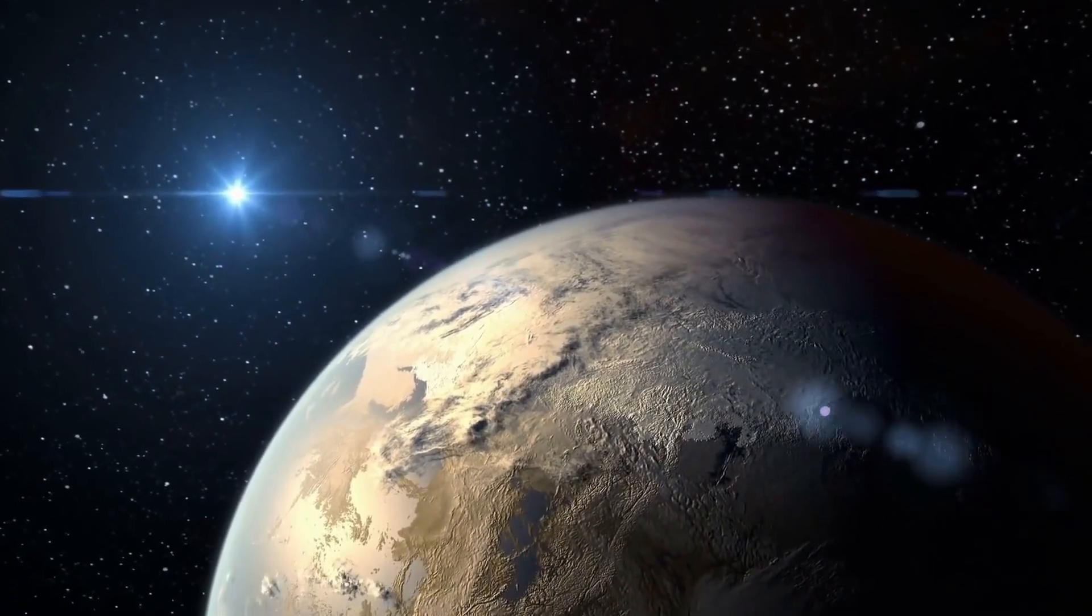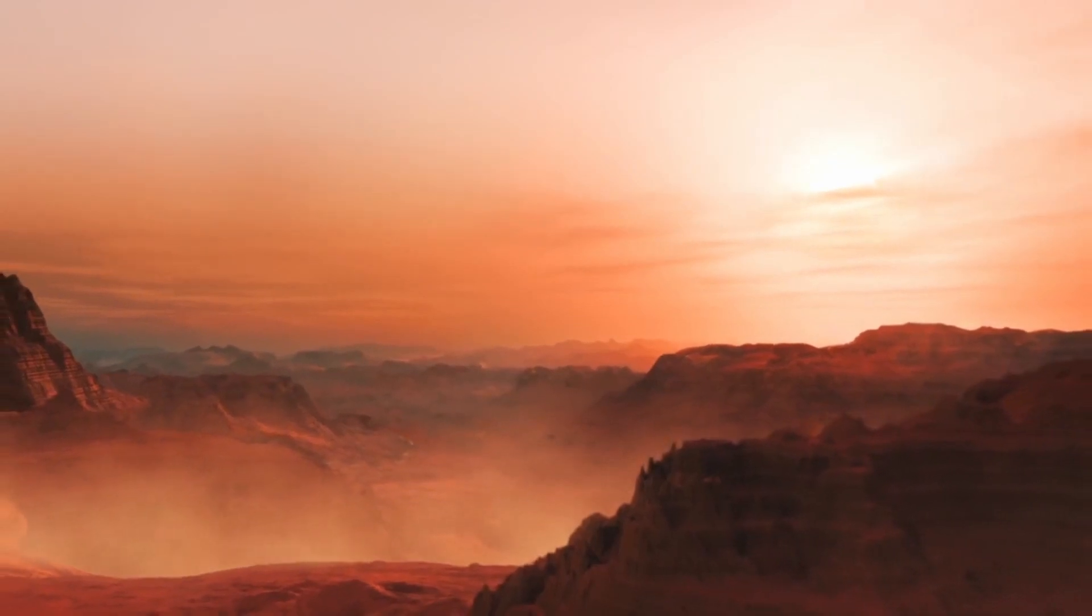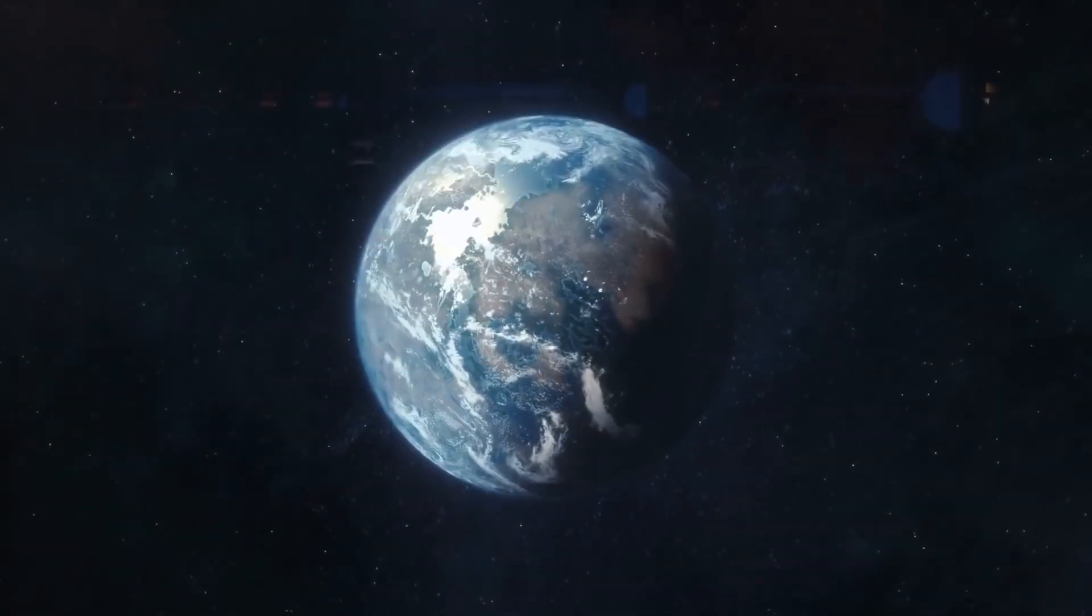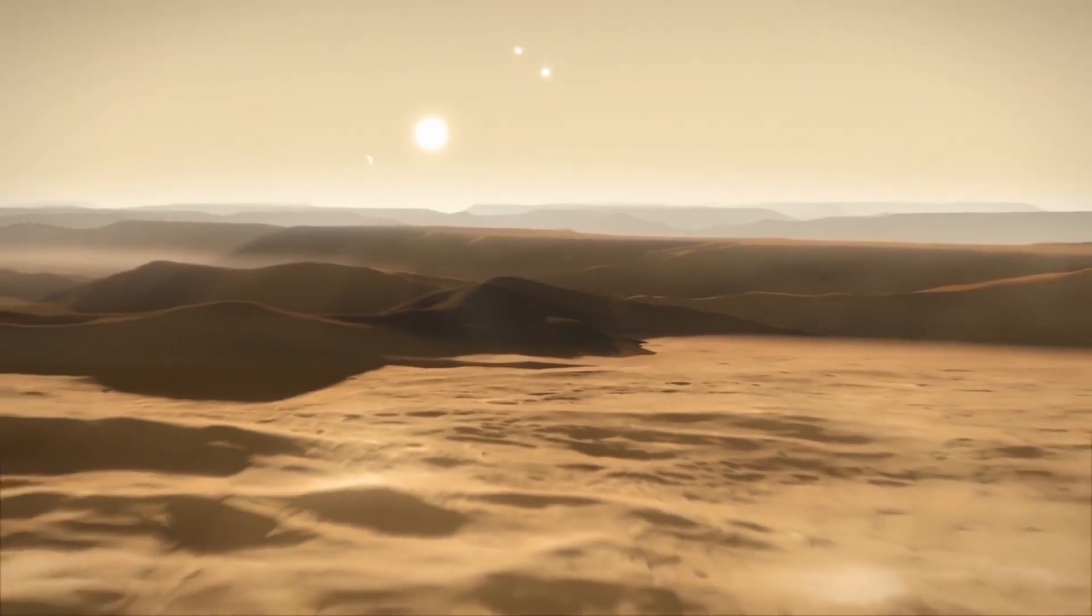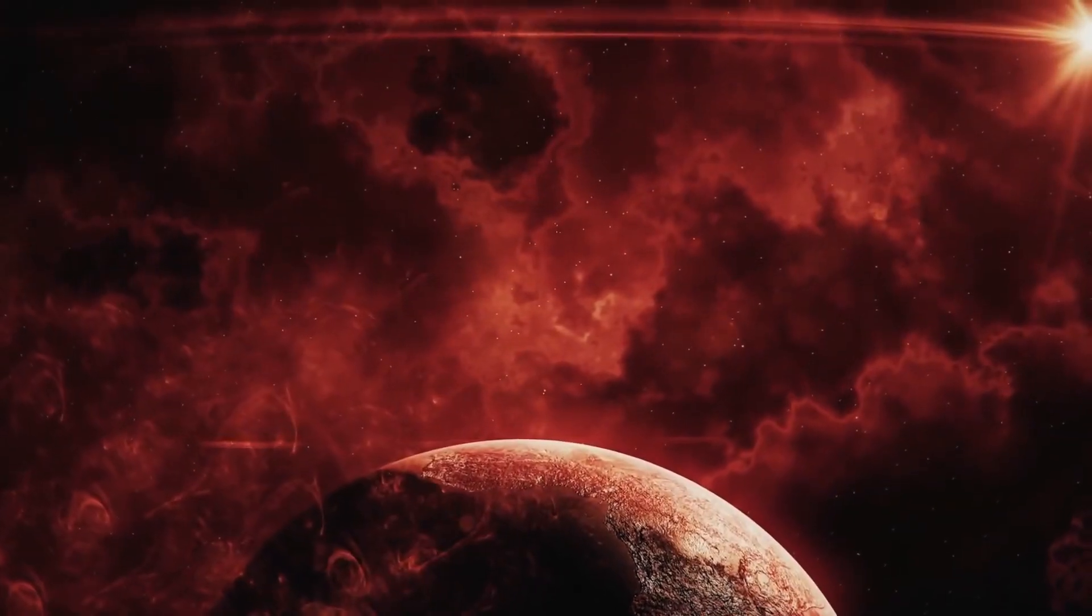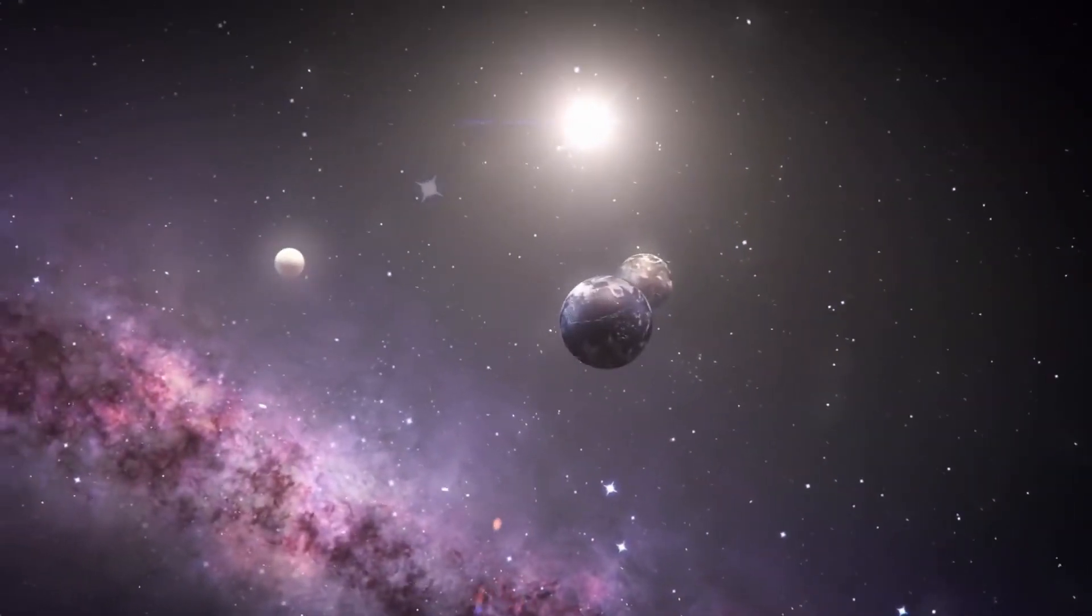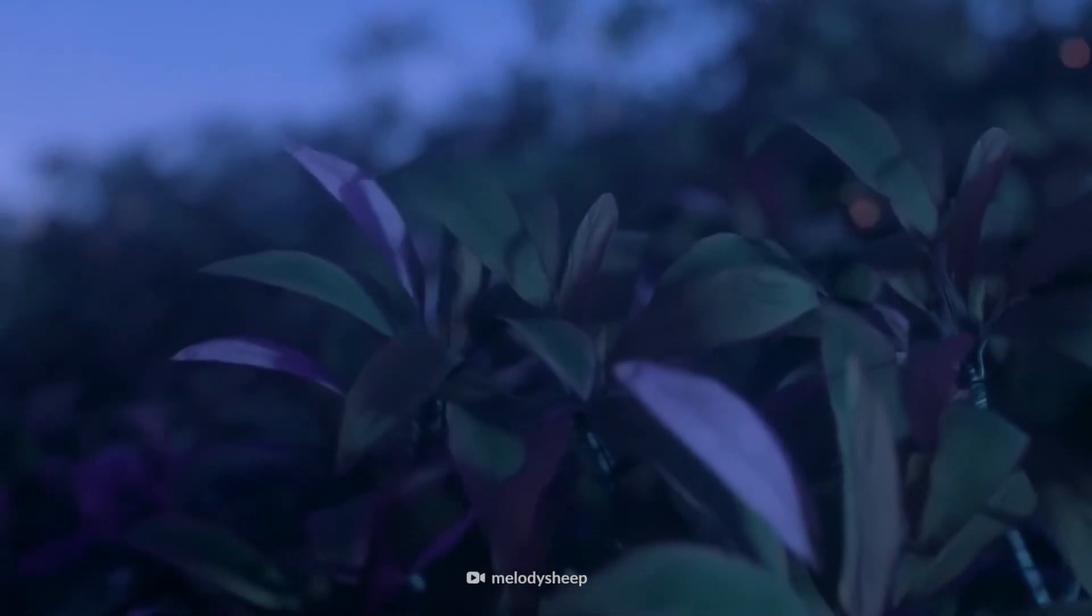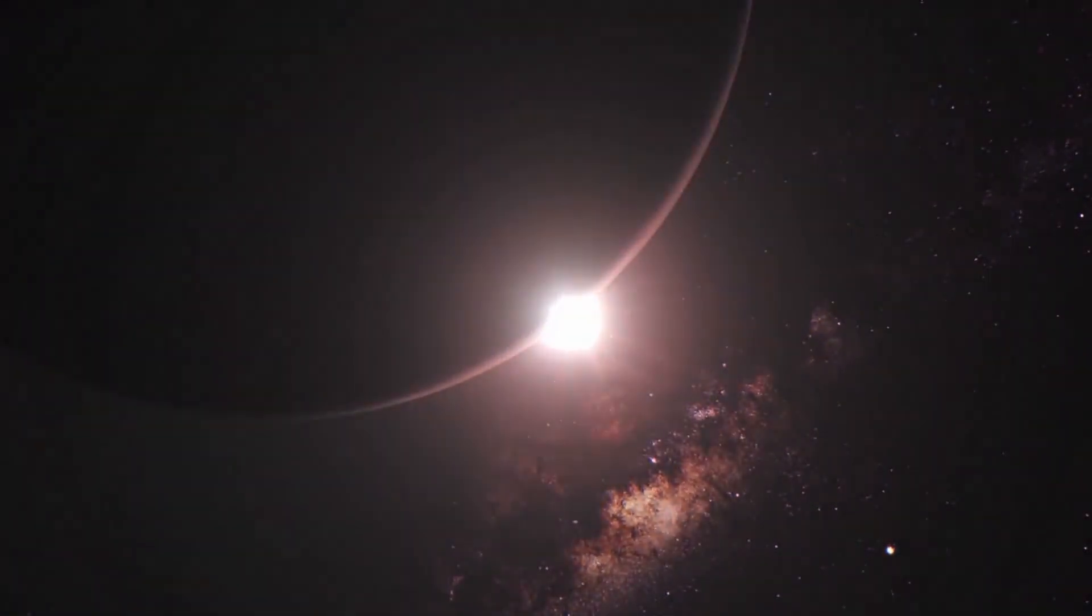While Earth-like in many aspects, Gliese 667c possesses distinct advantages. Despite being roughly 4.5 times the mass of Earth, its size implies the likelihood of a solid, rocky surface, a critical factor for supporting diverse ecosystems. Moreover, the planet's parent star, a red dwarf, offers a stable and relatively cooler energy source, potentially fostering a conducive environment for life to thrive. The habitable zone positioning ignites hope for stable temperatures and atmospheric conditions capable of supporting a myriad of life forms.